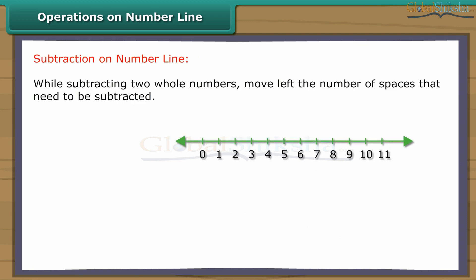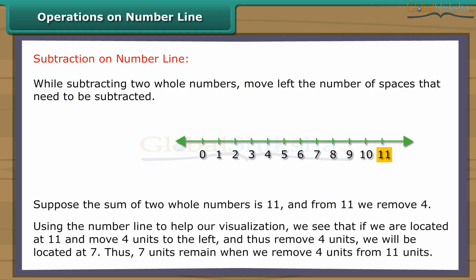While subtracting two whole numbers, move left the number of spaces that need to be subtracted. Suppose the sum of two whole numbers is eleven, and from eleven we remove four. Using the number line to help our visualization, we see that if we are located at eleven and move four units to the left, and thus remove four units, we will be located at seven. Thus, seven units remain when we remove four units from eleven units.